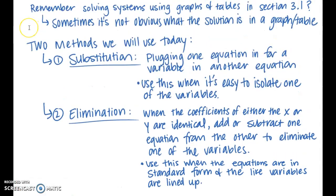The two methods are substitution and elimination. Substitution is when you plug in one equation in for a variable in another equation, and then you solve for the variable that is remaining. It is best to use substitution when it is easy to isolate one of the variables. Elimination is the other method. When the coefficients of either the x or the y are identical, you want to add or subtract one equation from the other to eliminate one of the variables, and then solve for the other variable. It's best to use elimination when the equations are in standard form, ax plus by equals c, and the like variables are lined up.